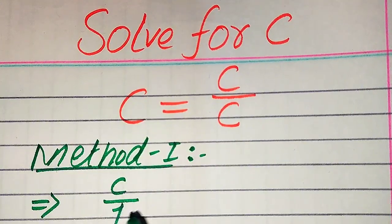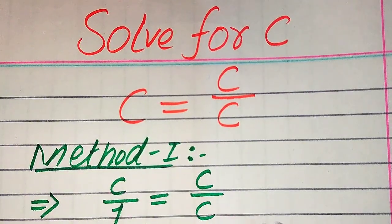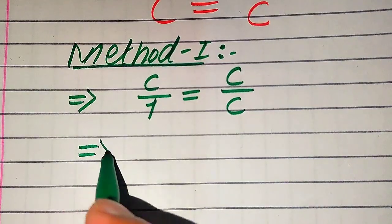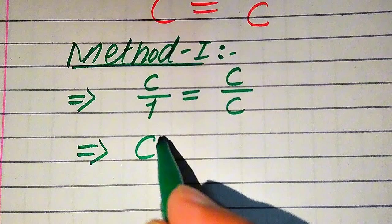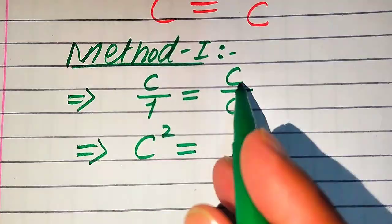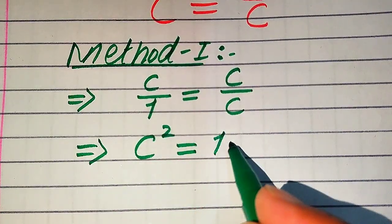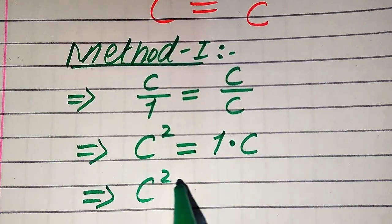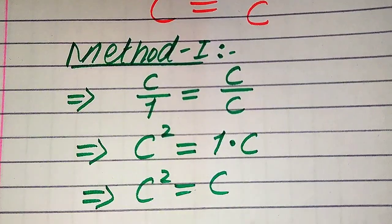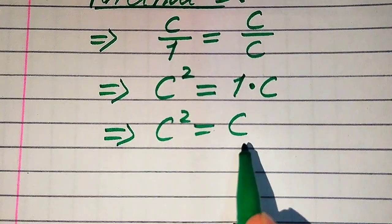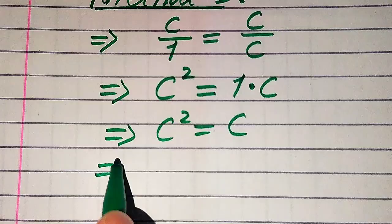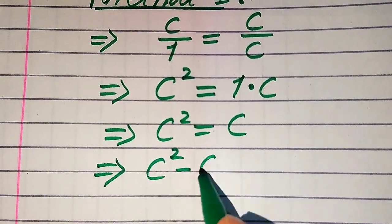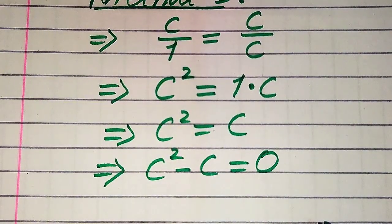You see here on the left-hand side the denominator of this term is 1, and on the right-hand side we have c divided by c. We cross multiply the terms: we multiply c with c and it becomes c squared, and we multiply 1 with c and it becomes c. So we have c squared equals c. Now we move c to the left-hand side.